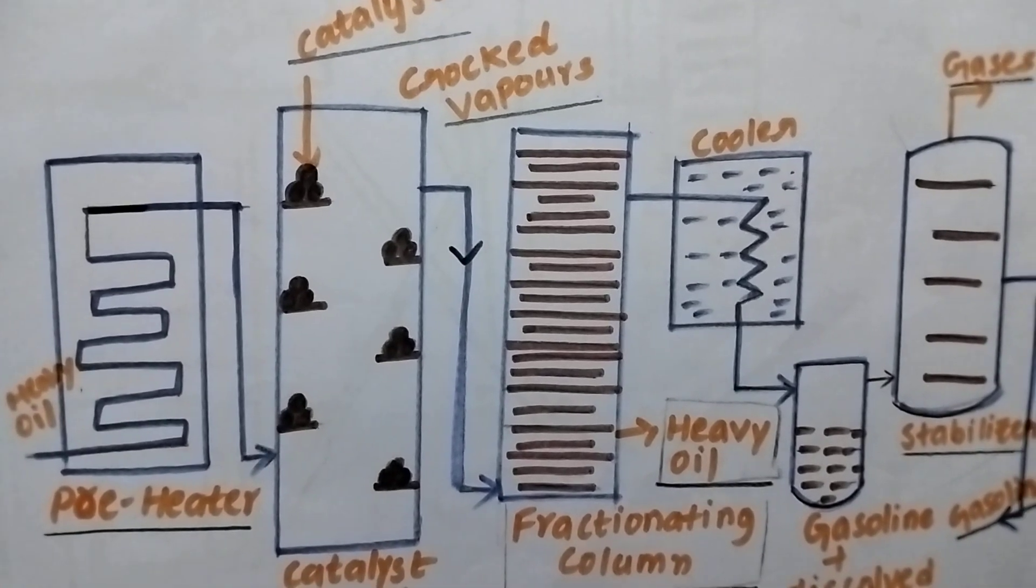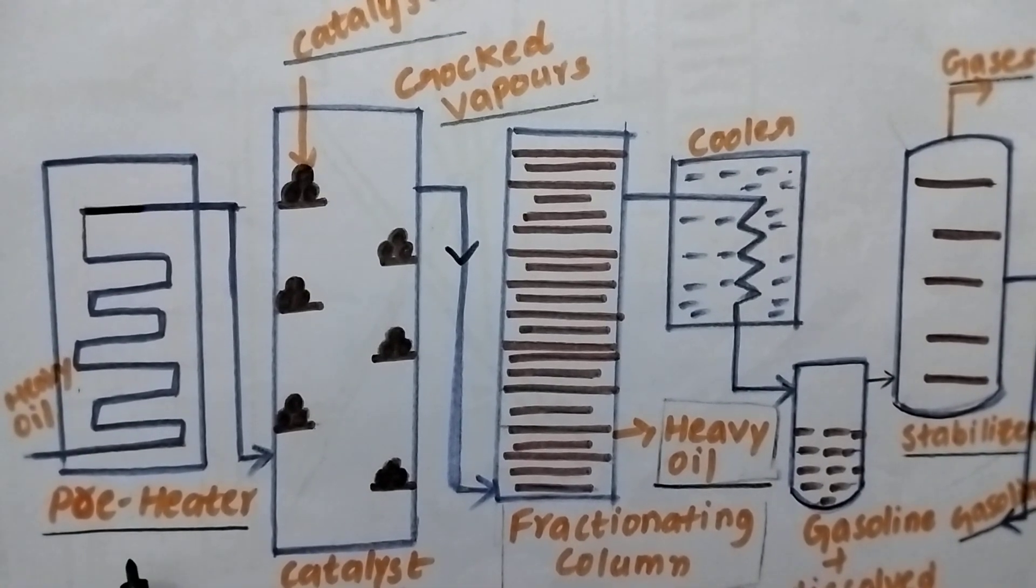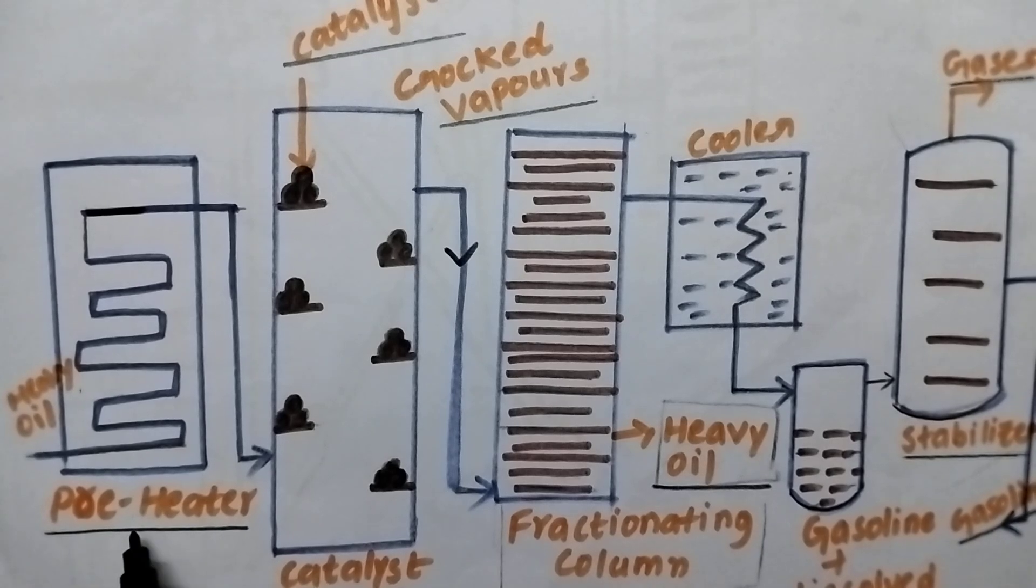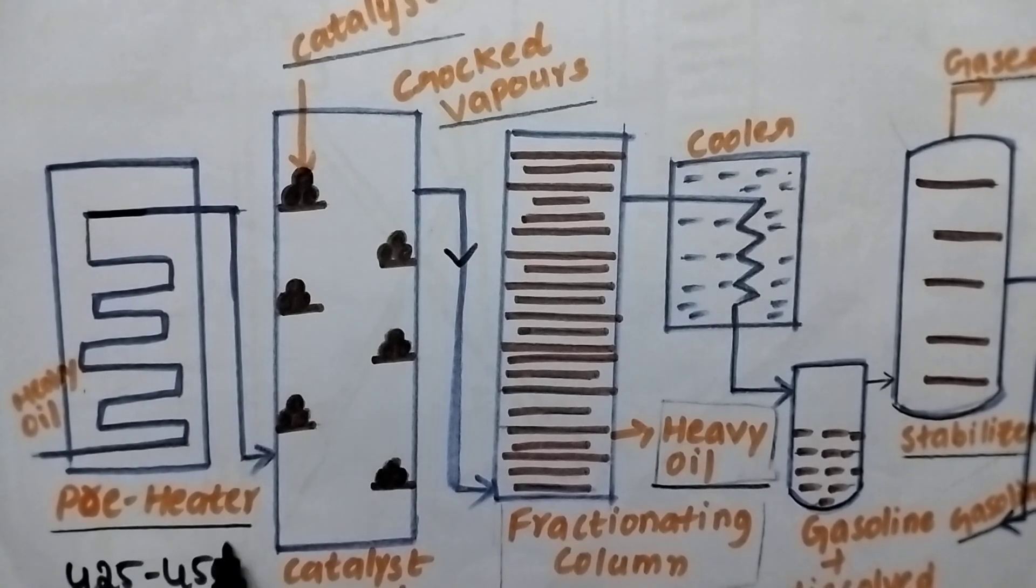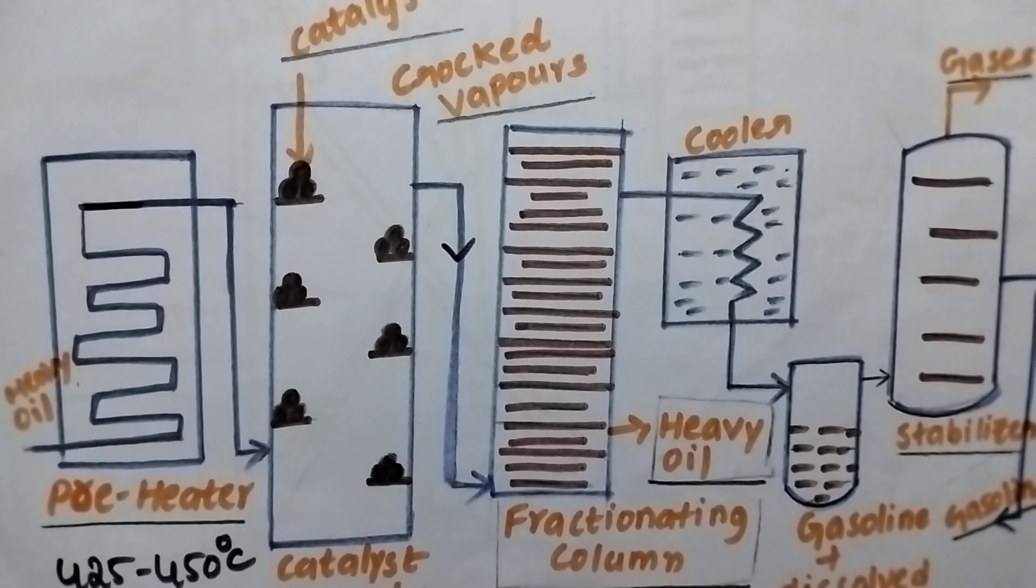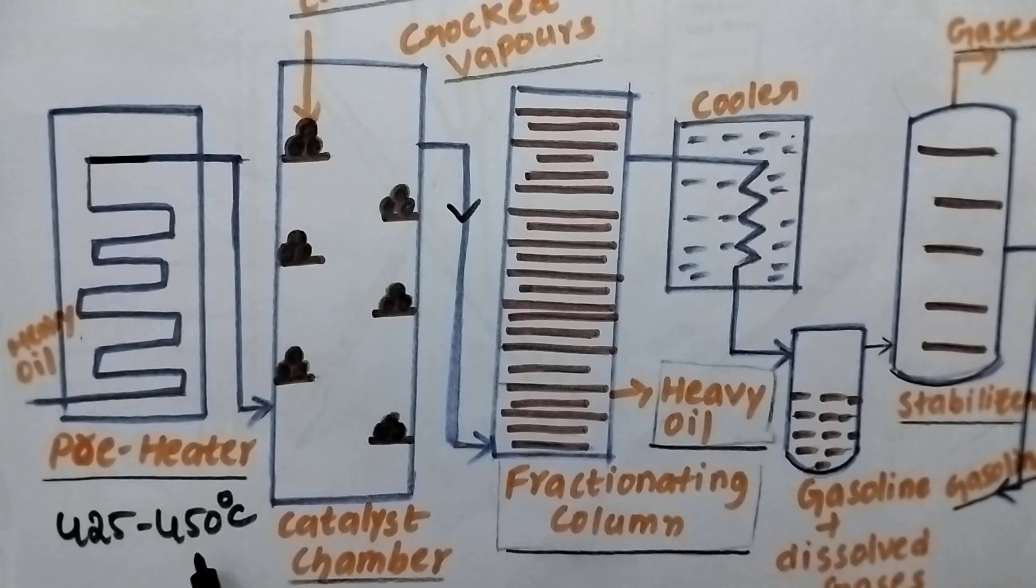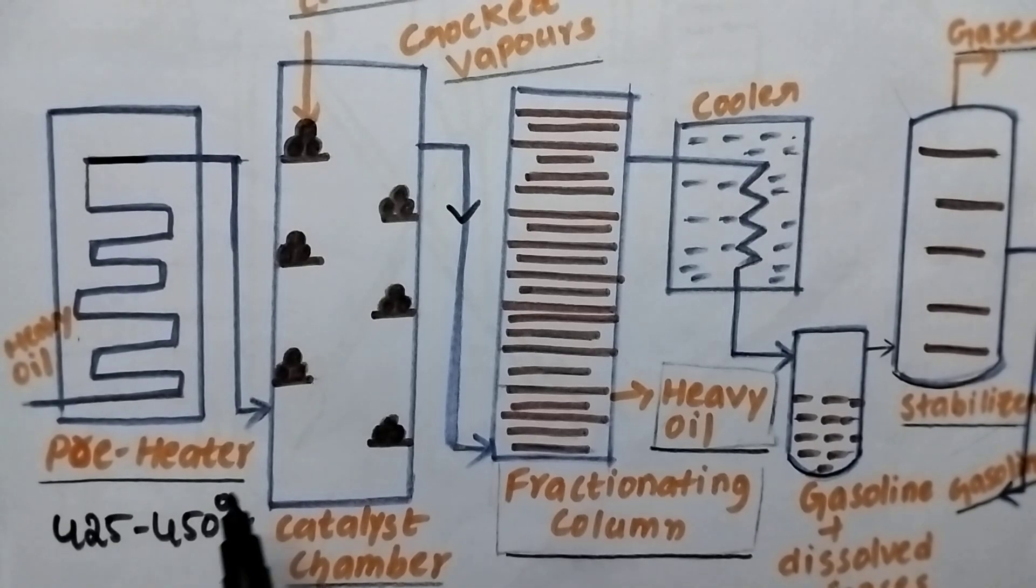Coming to the fixed bed catalytic cracking, initially the heavy oil is heated in a preheater for about 425 to 450 degree centigrade. At this temperature the heavy oil will be converted into vapour state.